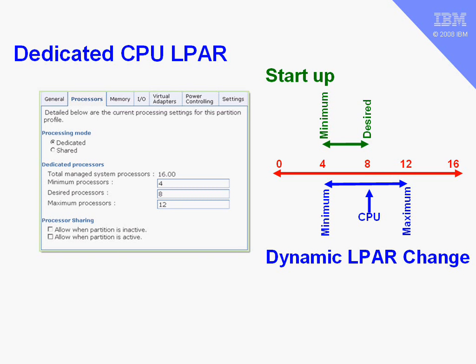When our logical partition is actually running, we have a certain number of CPUs allocated to it and we can dynamically change those. We go to the HMC or the IVM and tell it to change the number of CPUs for this logical partition. The minimum and maximum numbers are used as bounds checks — we can't go below the minimum and we can't go above the maximum. But these minimums and maximums don't affect the partition as it's running; whatever the number of CPUs allocated to the logical partition is the amount of compute resources it actually has.